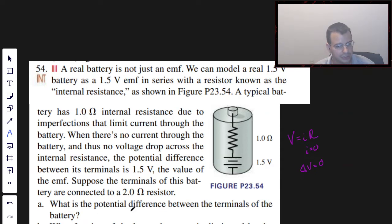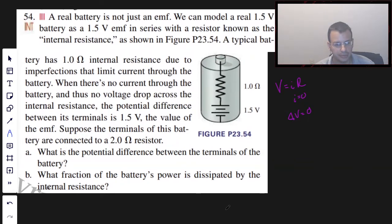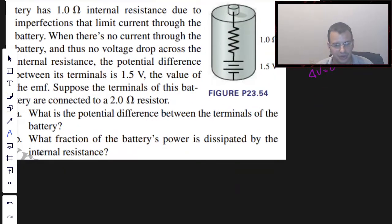Suppose the terminals of the battery are connected to a 2 ohm resistor. What is the potential difference across the terminals of the battery, and what fraction of the power is dissipated?